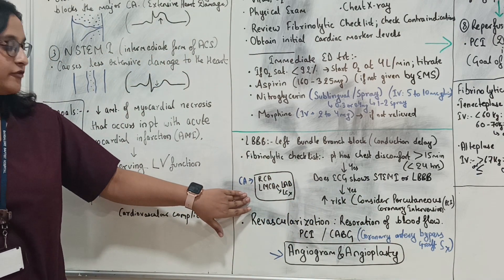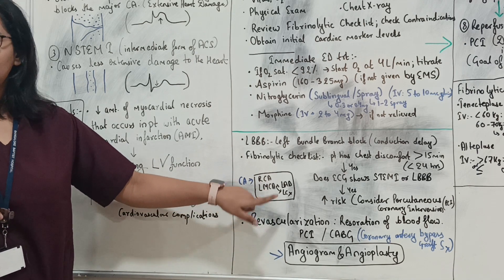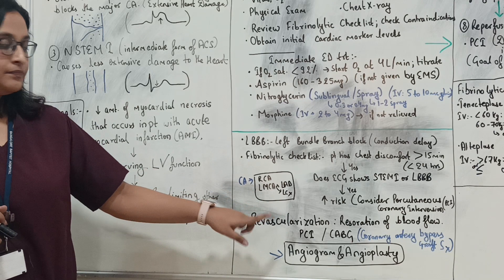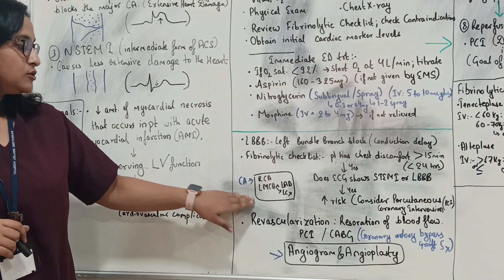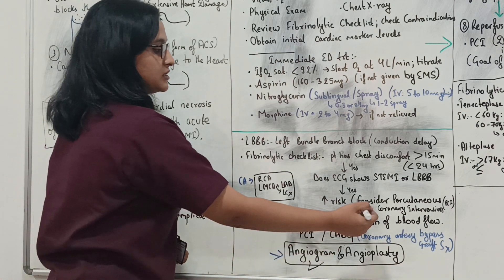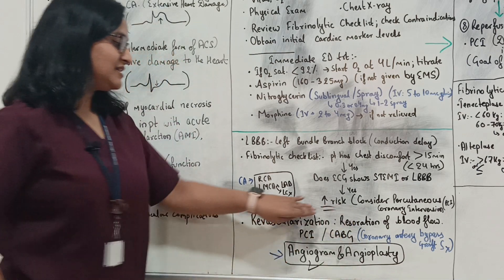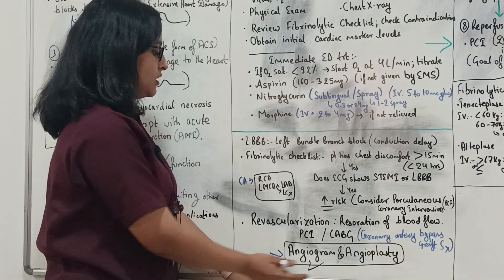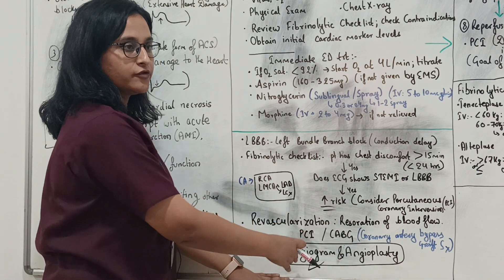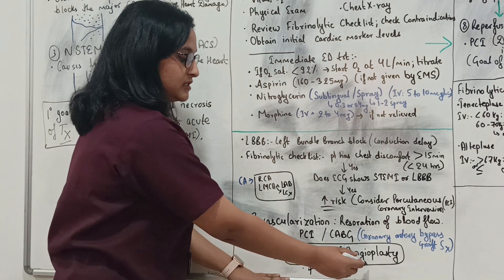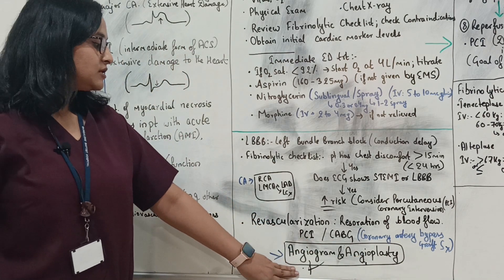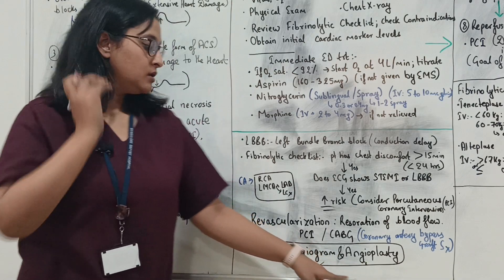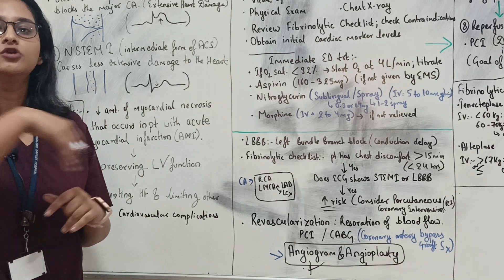There are two main coronary arteries: the right coronary artery and the left main coronary artery. The subtypes of the left main coronary artery are the LAD — left anterior descending artery — and the left circumflex artery. An angiogram, which is a diagnostic imaging procedure, is done in serious patients. If a block is found in any of these arteries, stenting is performed to restore blood flow.